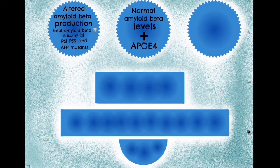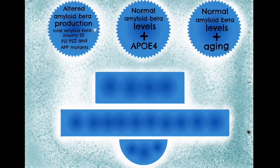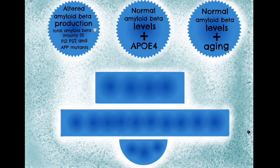Homozygous expression of apolipoprotein E-epsilon-4, which is an allele, is associated with an increased likelihood of developing sporadic Alzheimer's. The vast majority of sporadic Alzheimer's disease occurs in those over the age of 65, and the single greatest risk factor is increasing age. Other factors such as homozygosity for apolipoprotein E-epsilon-4, vascular factors such as increased blood pressure, diabetes, dyslipidemia, and decreased physical activity are also associated with the development of sporadic Alzheimer's disease.